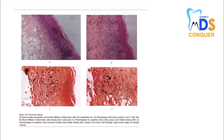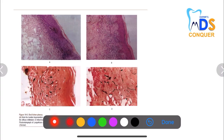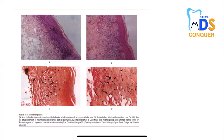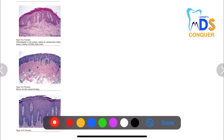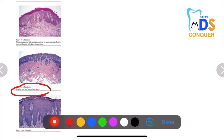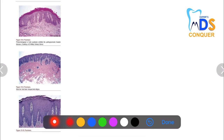Next, oral lichen planus — there is basilar degeneration as seen in picture A, and various other histological pictures are shown; read the description below. One classic histological feature is the saw-tooth rete pegs, seen with lichen planus. Next, test-tube-shaped rete pegs are seen with psoriasis.